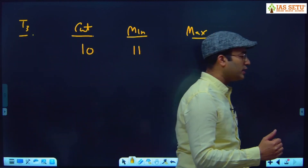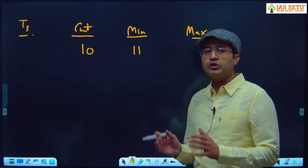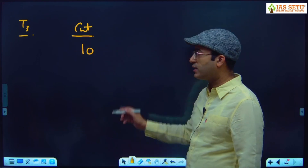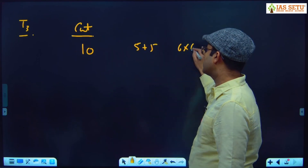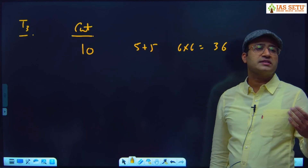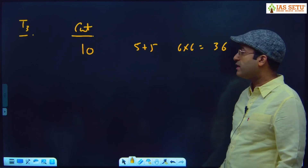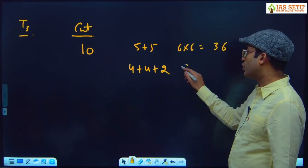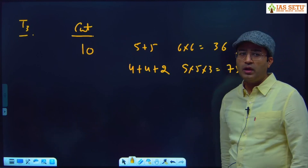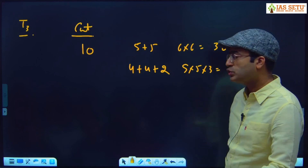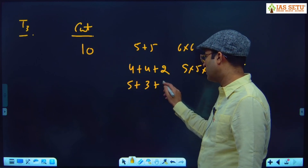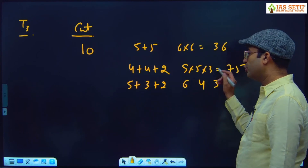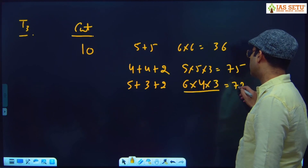Some students got the answer 36 — that means you distributed 10 cuts as 5 + 5, giving 6 × 6 = 36. Those getting 75 distributed as 4 + 4 + 2, giving 5 × 5 × 3 = 75. Those getting 72 did 5 + 3 + 2: 5 cuts give 6 pieces, 3 cuts give 4 pieces, 2 cuts give 3 pieces — so 6 × 4 × 3 = 72.